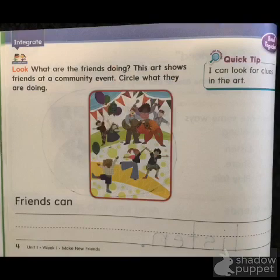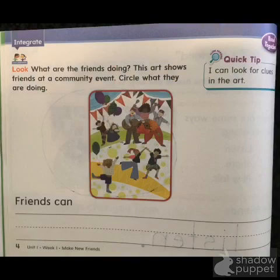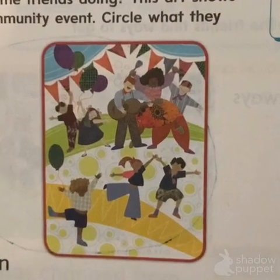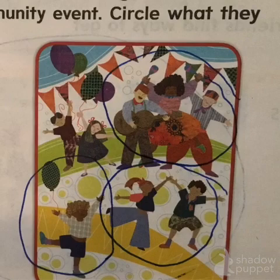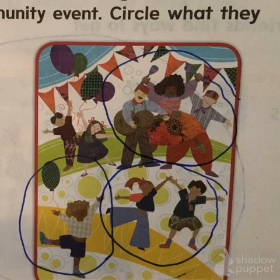When you're done, find the back of that page, which is page number four. I'm going to read what it says, and we have a beautiful picture right there. One of the quick tips is: I can look for clues in the art. The art is that colorful picture with people that are dancing. It says to look — what are the friends doing? The art shows friends at a community event. Circle what they're doing. We see someone with a balloon, some other people with a balloon, some people dancing, and almost like a band — it looks like they're playing a guitar, singing, having fun. So you're going to circle those things.